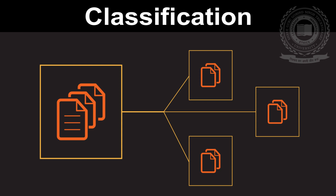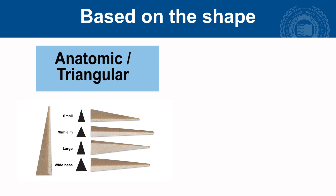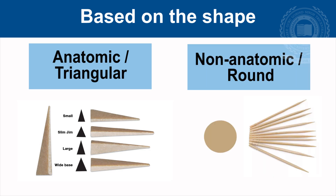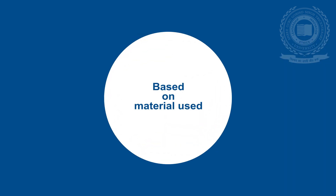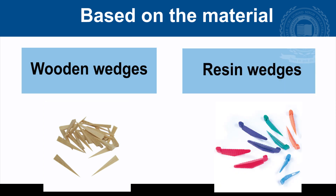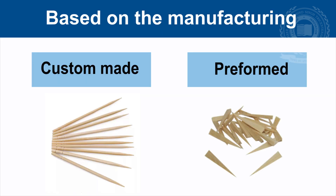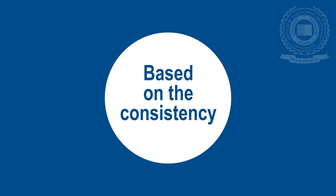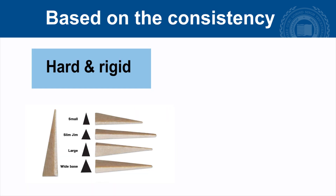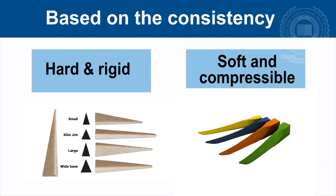Classification of wedges: Based on shape, they are classified as anatomic or triangular and non-anatomic or round. Based on material, they are classified as wooden wedges and resin wedges. Based on manufacturing, they are either custom-made or preformed. Based on consistency, they are hard and rigid — i.e., oak wood wedges — or soft and compressible — i.e., pine wood wedges.